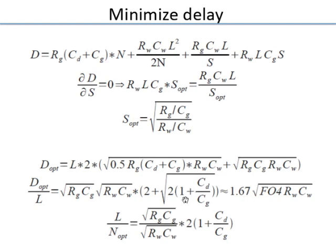The fanout-4 (FO4) delay is ~φτ. Rewriting everything in terms of FO4 delay, the delay per unit length becomes approximately 1.67 × √(FO4 × Rw·Cw). Similarly, the optimum segment length L/n_opt is another useful constant. These two numbers — delay per millimeter and optimal repeater spacing — are very good to know for product planning and design.